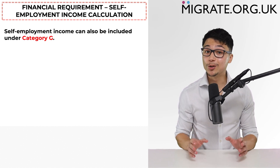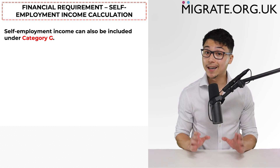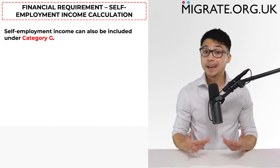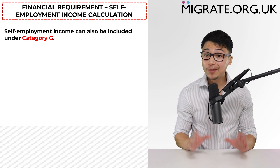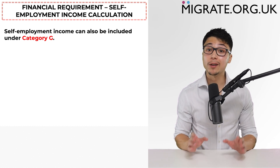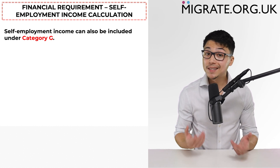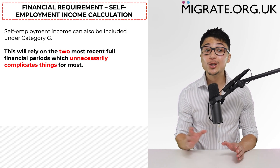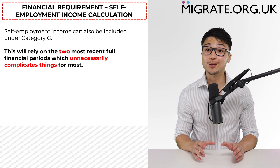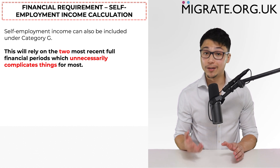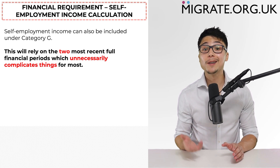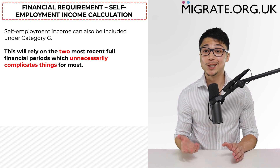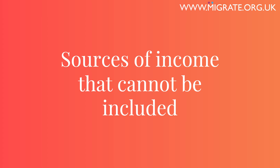Self-employment income can also be included under category G. However, it's quite rare for partners to rely on this category since it relies on the two most recent full financial periods, which unnecessarily complicates things for most.